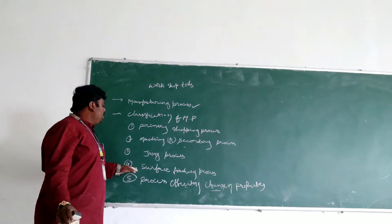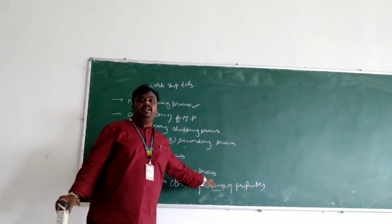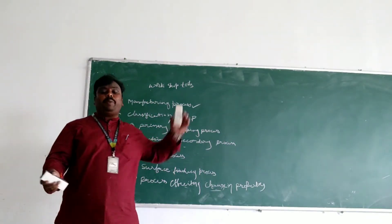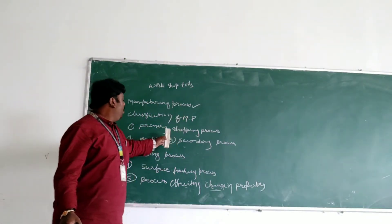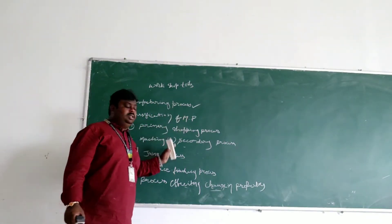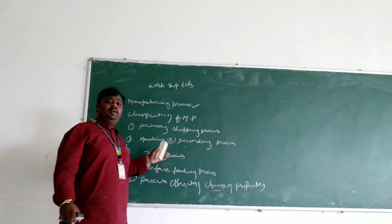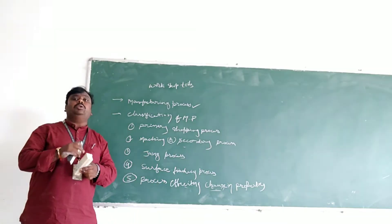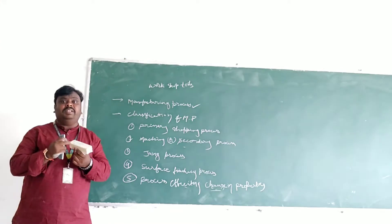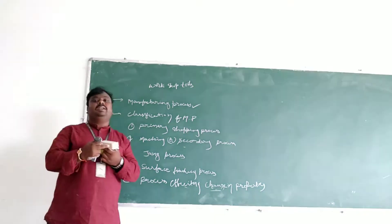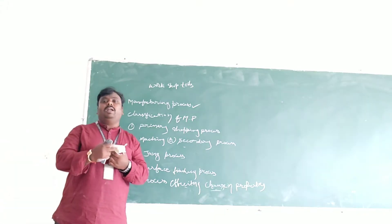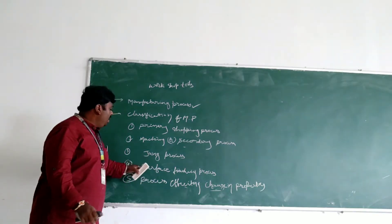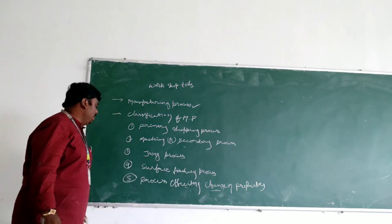Next is the surface finishing process. When you do the raw material, you can convert it from primary position to secondary position, and secondary position then you can convert into joining process. In that you are going to do the surface finishing - you are going to elaborate the shining operation. This is the surface finishing operation.